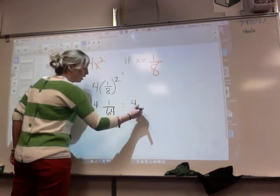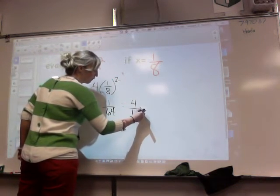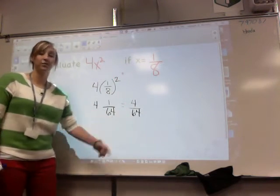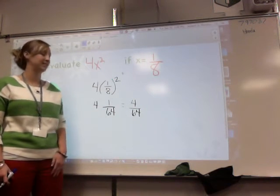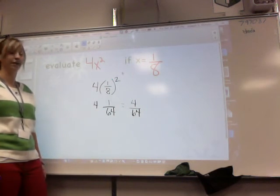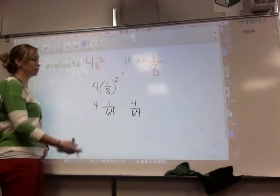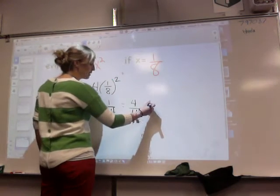That would equal 4 over 64. Now you have to reduce your fraction because 4 over 64 is not good to have. So they're both even so we can just divide them both in half.